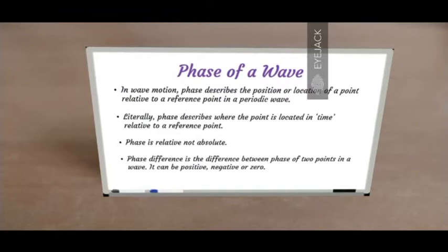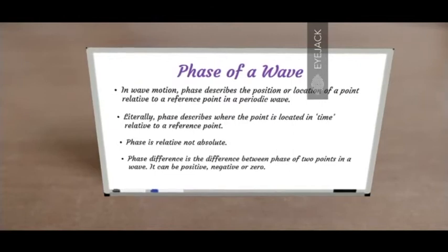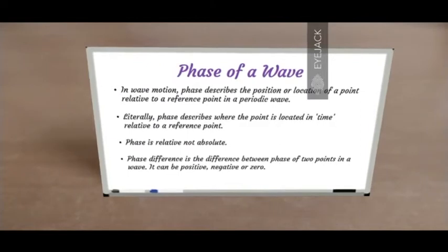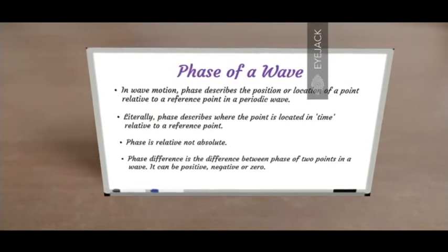So far we've learned that an all-pass filter passes all the frequencies equally in amplitude but does change the phase relationship between the frequencies. To understand what happens there, let's understand what is a phase of a wave first. Phase of a wave describes the position or location of a point relative to a reference point in a periodic wave — literally where the point is located in time relative to a reference point. I'm going to stress the word relative here because phase is indeed relative — it's not absolute.